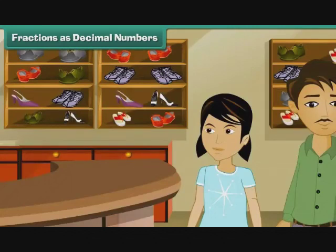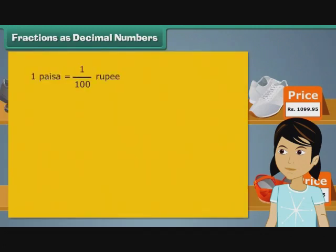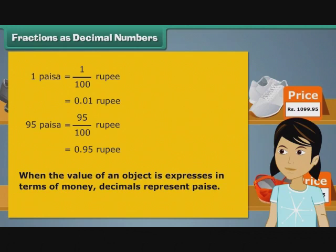Arpita went with her father to buy her school shoes. Prices of footwear in the store were expressed as decimal numbers. She wondered what the decimals in the prices meant. 100 paise make 1 rupee. In other words, 1 paise is 1 by 100th of a rupee. It can also be written as 0.01 rupee. Therefore, 95 paise form 95 by 100th of a rupee. We can express 95 paise as 0.95 rupee. Therefore, the decimals in the footwear stood for paise. When the value of an object is expressed in terms of money, the decimal represents paise.